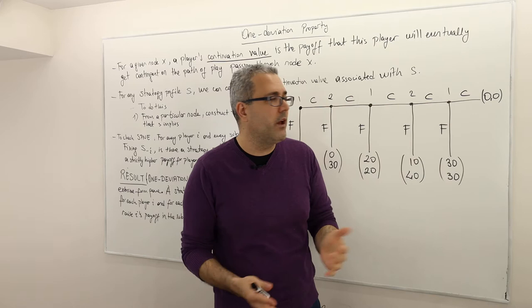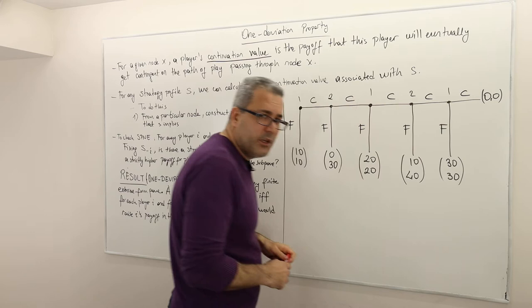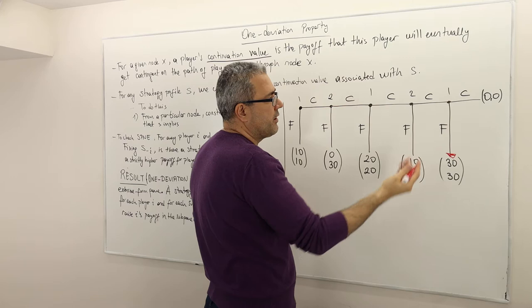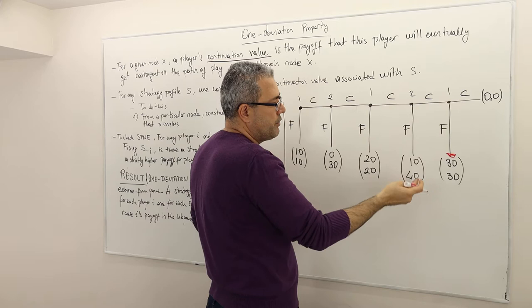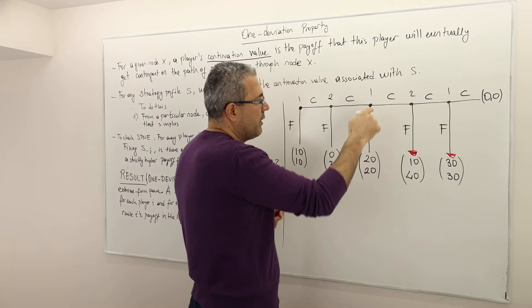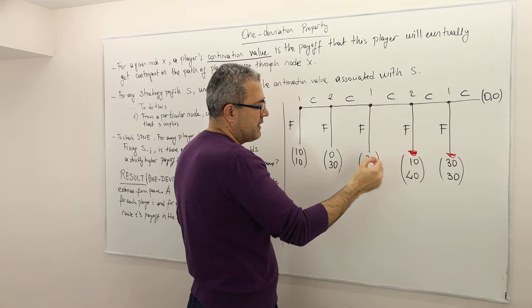So what is the subgame perfect Nash equilibrium of this game? Let's find it using backward induction. In the last decision node, player one chooses F because 30 is higher than 0. Moving a step back, player two chooses F because 40 is higher than 30, knowing player one will choose F. At the next decision node, player one chooses F (getting 20) over C (which would yield only 10, since the opponent then plays F).